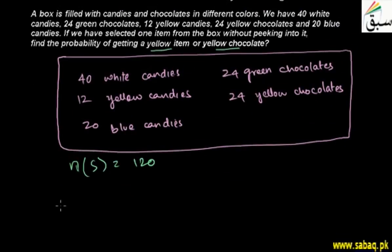I will say event A: picking a yellow item, and event B: picking a yellow chocolate.